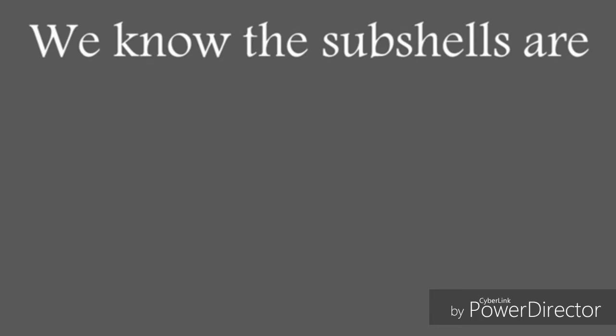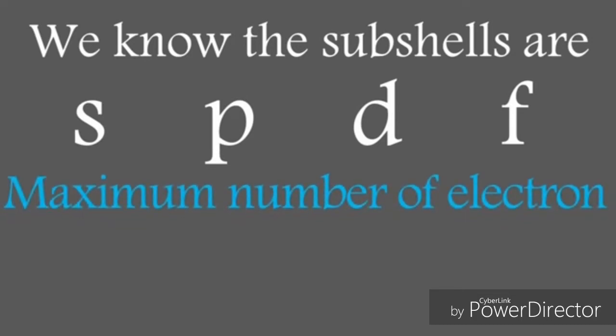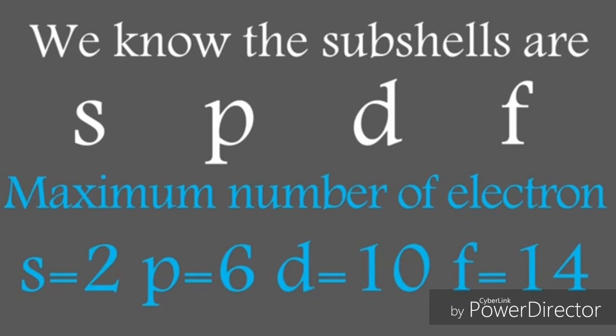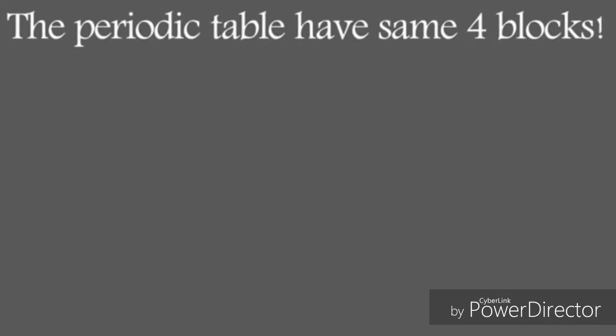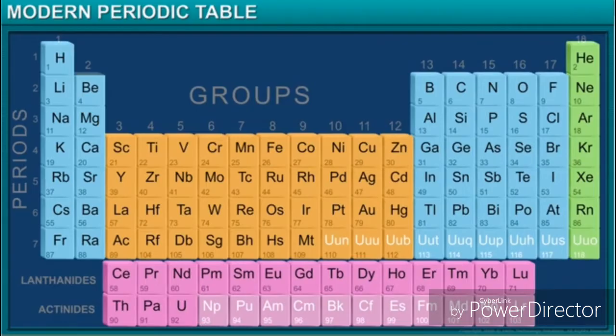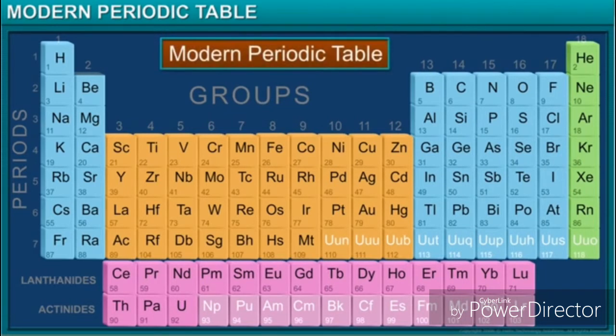The sub energy levels are s, p, d, f. Each sublevel has a maximum number of electrons: s equals 2, p equals 6, d equals 10, f equals 14. So we find the periodic table has the same four blocks: s, p, d, f.